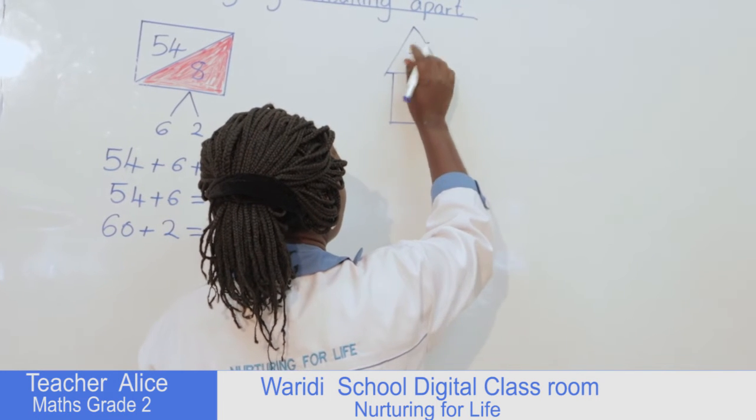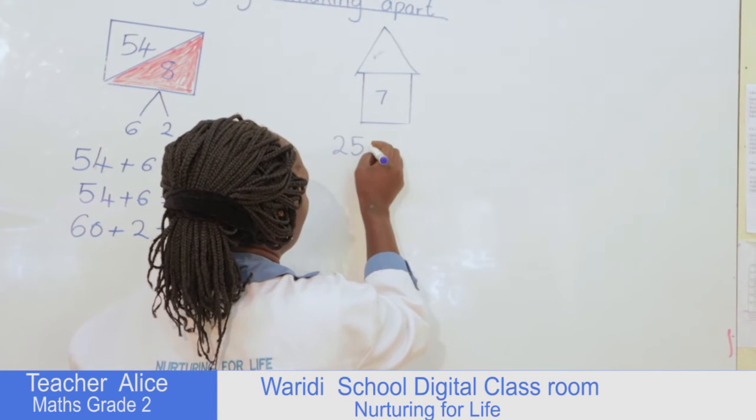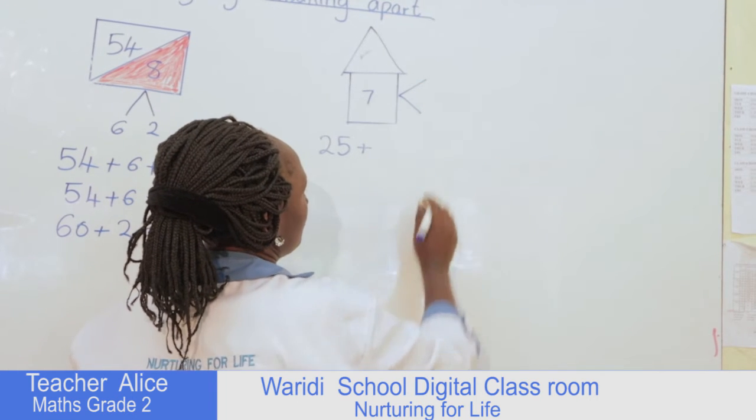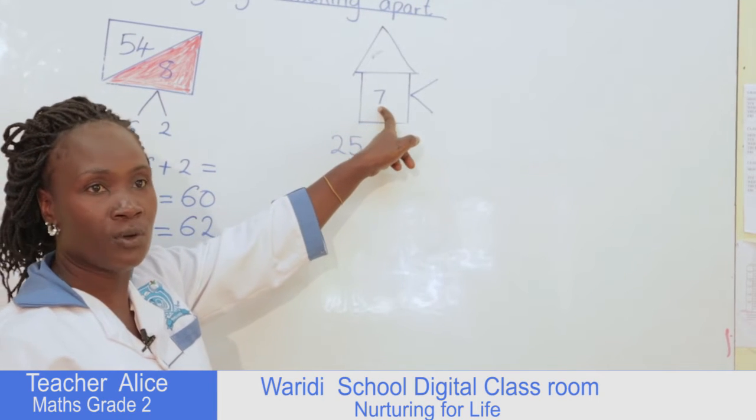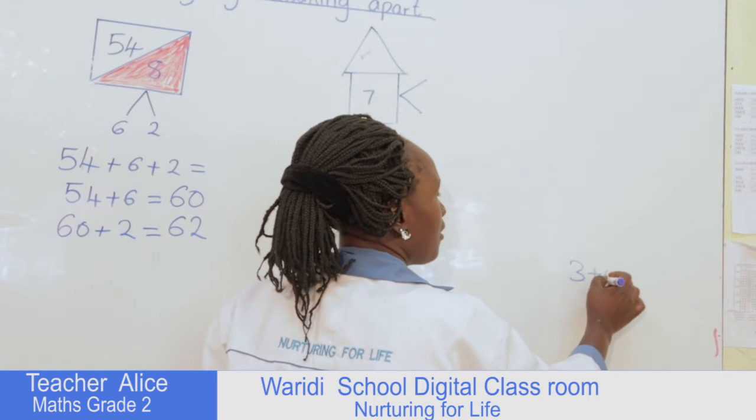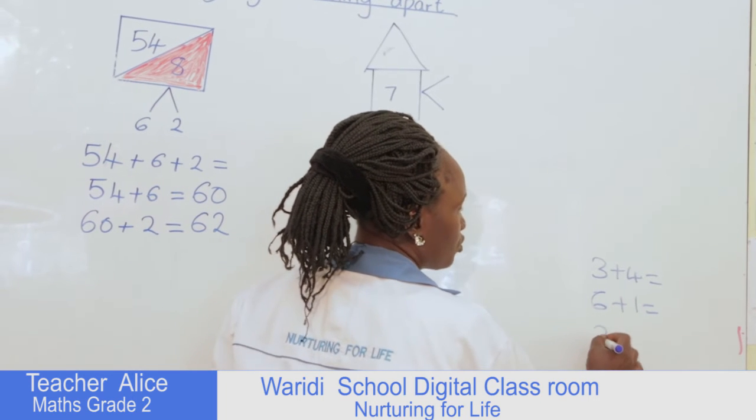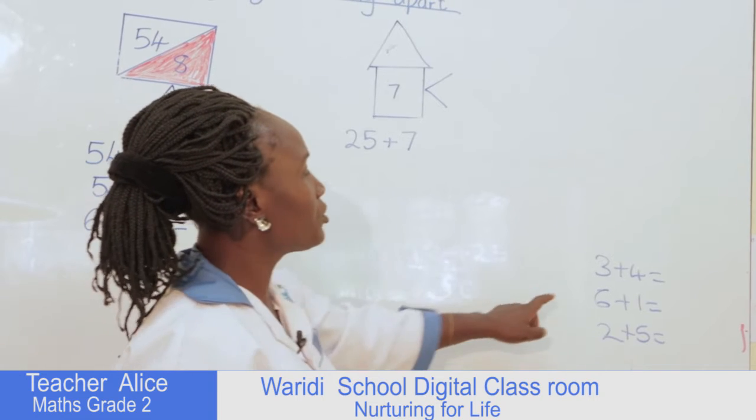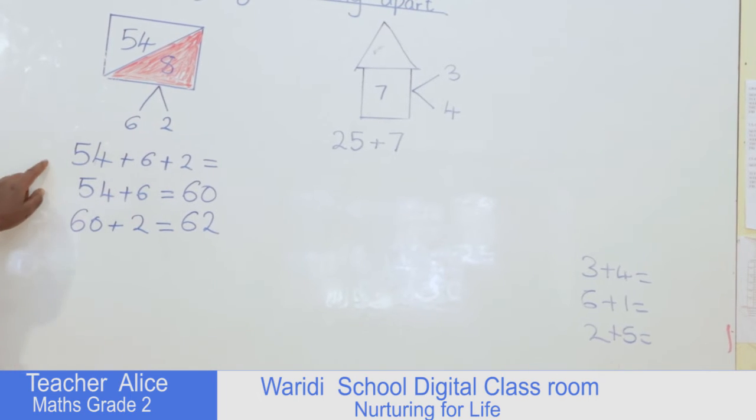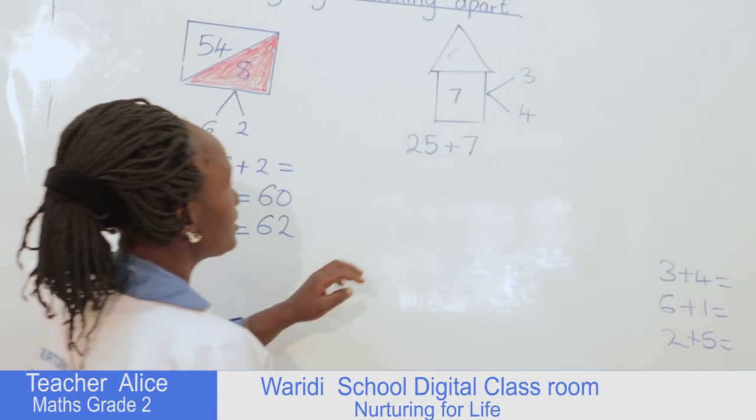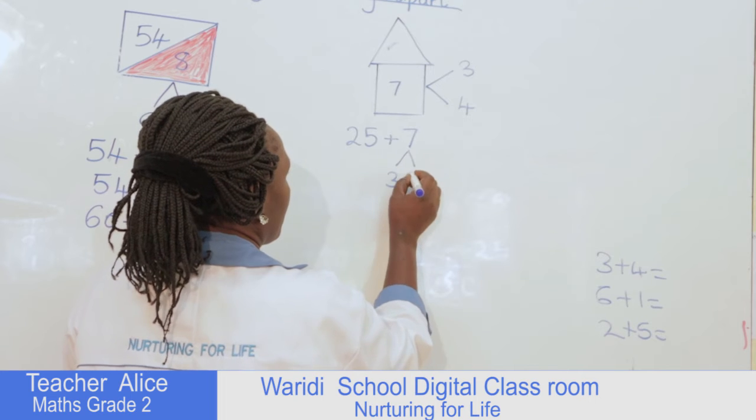This one is a hat. We'll have our number here, 7. Then the number is going to be 25 plus 7. Remember we are breaking this number 7. So we are going to check which two numbers when you add will give you 7. We can have 3 plus 4 equals 7, 6 plus 1 will give you 7, 2 plus 5 will give you 7. Today we are going to use 3 and 4. So we write our number here, 3 and 4. We are still going to use the same formula that we had used before. Remember we are breaking this number, so you write your number 3 and 4.